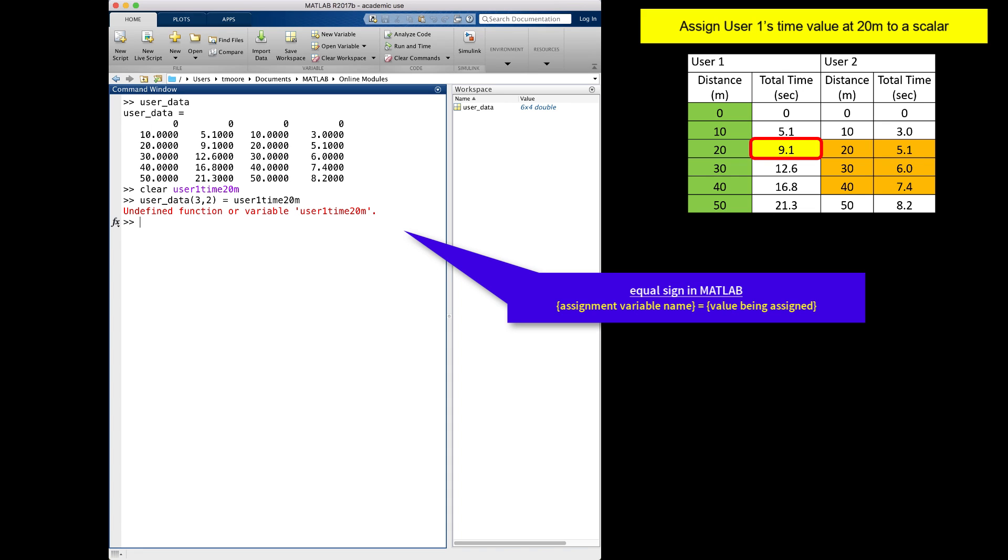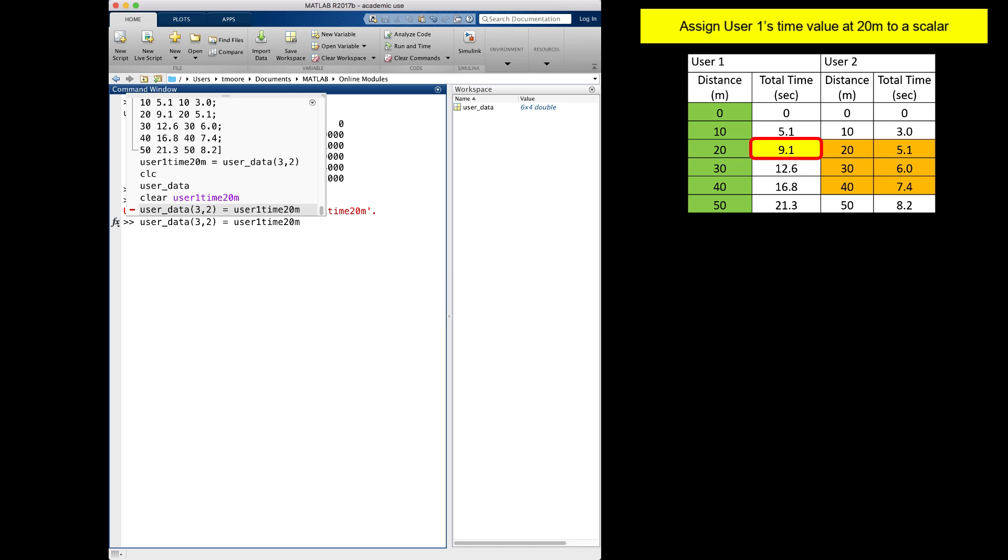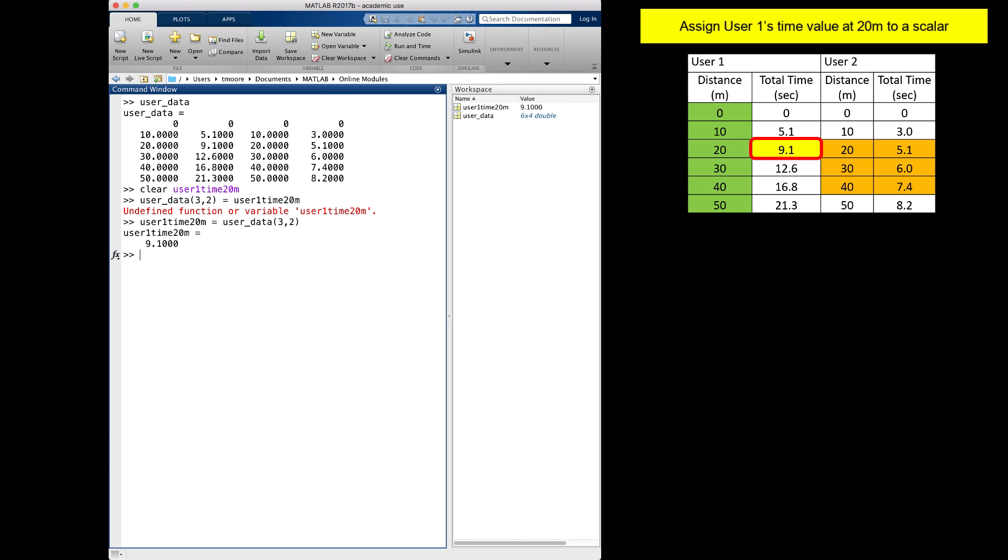Because when assigning values to variables, MATLAB treats the item on the right of the equal sign as the value that will be assigned to the variable on the left of the equal sign. Since user1time20m does not exist, MATLAB returns the error: undefined function or variable. So I will return to the original MATLAB code to assign user1time20m the appropriate value.